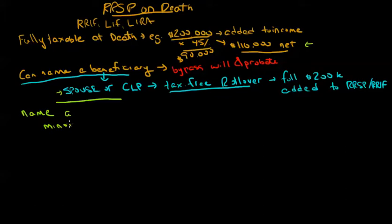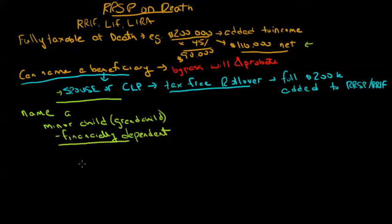minor child as beneficiary, and this could include a grandchild. In order for this to happen, this minor child or grandchild would have to be financially dependent, which is basically that there's a degree of dependence between the deceased and the child. And if we name a minor child, there is now an annuitization requirement - that is, this minor child cannot keep this money forever.